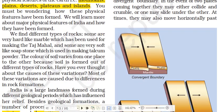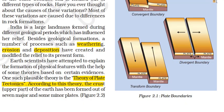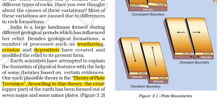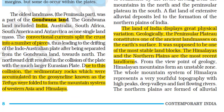Plates have three kinds of movements. First is convergent boundaries, where two plates come towards each other and collide. Second is divergent boundaries, where plates move away from each other, causing rift valleys to form. Sometimes plates slide past each other without colliding or separating — this is called a transform boundary. In geological history, there was a huge supercontinent termed as Pangea.